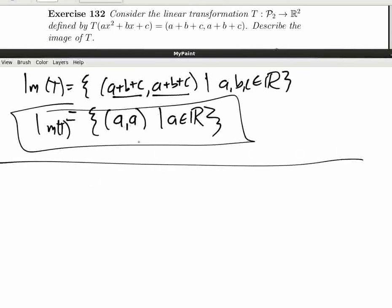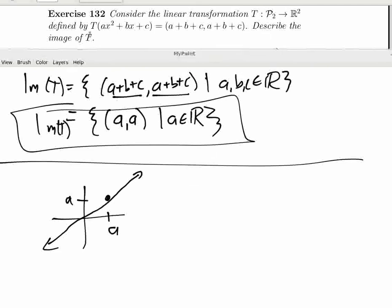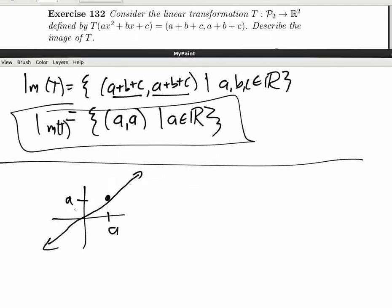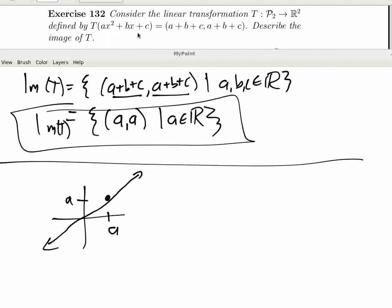If you want to think about this graphically, what is the set of a, a? Well, we're in R2. So if you have an a there, the output's an a there. And so this is just going to be the diagonal line through the origin. So that's what the image is. So when you map this polynomial, it's going to land somewhere along this line. It depends on what the coefficients are.